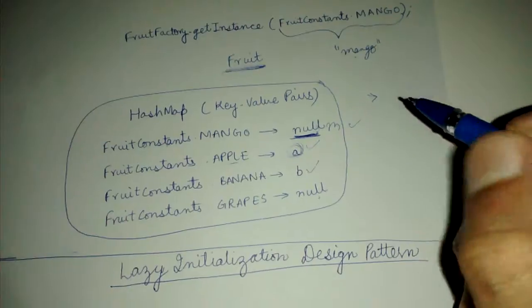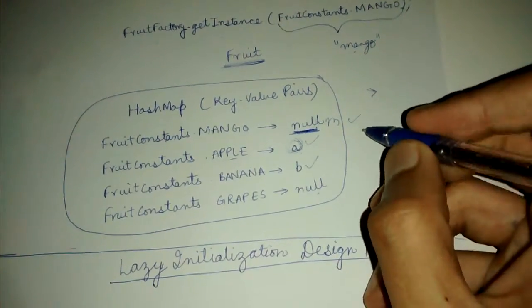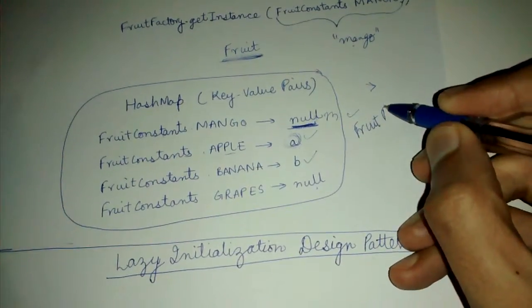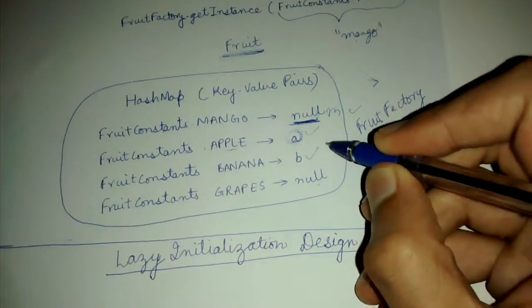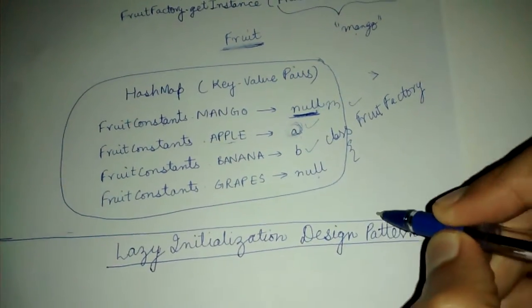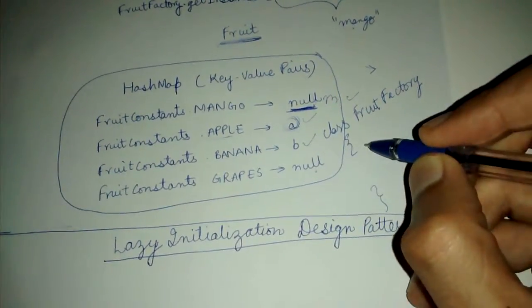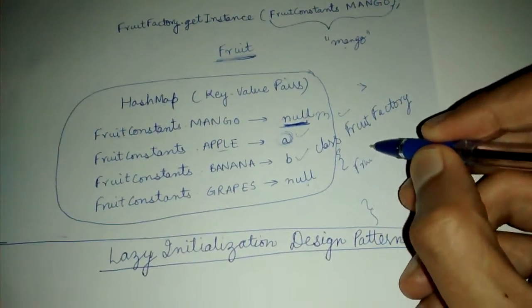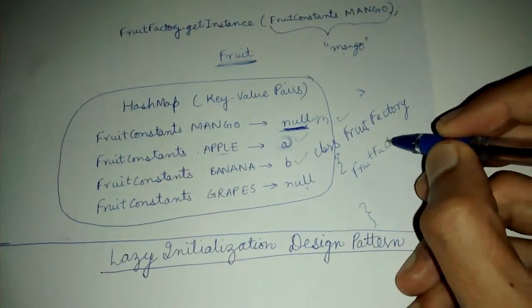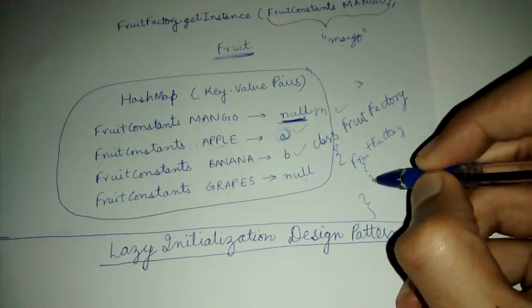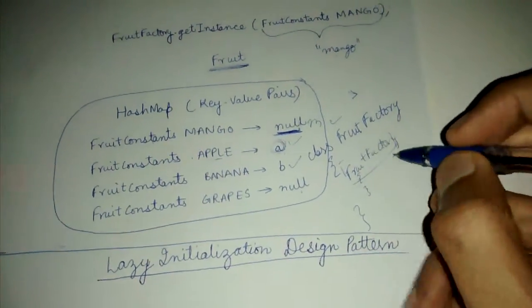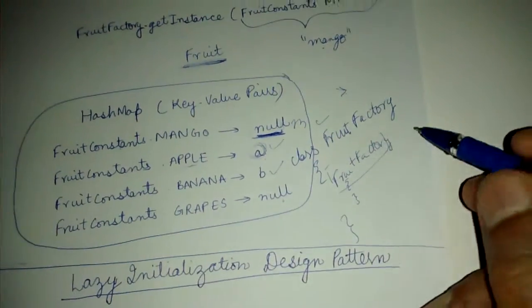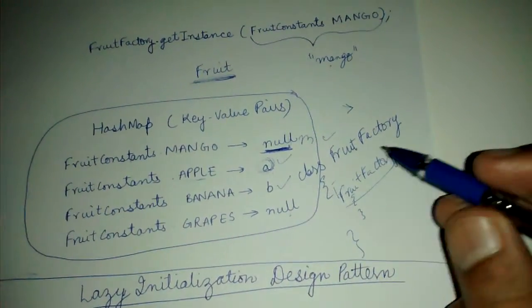So basically we are not writing this fruitFactory like this. Let's say class fruitFactory. We are not creating these fruits in the fruitFactory constructor or when this fruitFactory is first called. When the class is loaded, we don't create these fruits or when this fruitFactory is constructed.